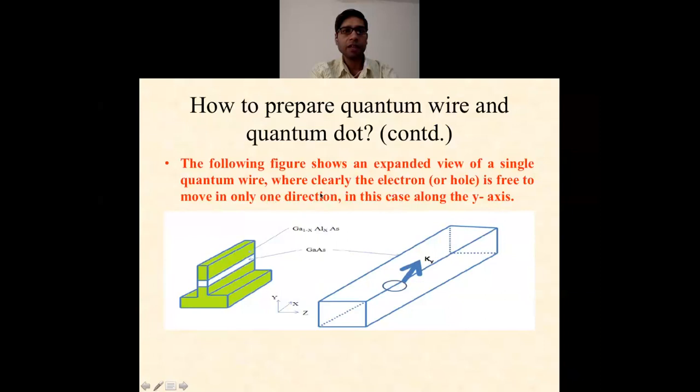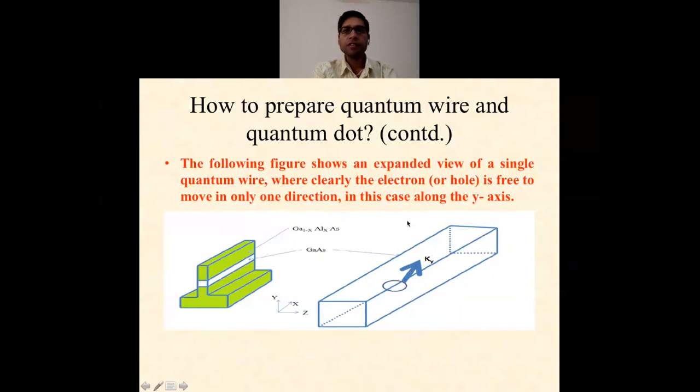Now, how to prepare quantum wires and quantum dots. The following figure shows an expanded view of a single quantum wire where clearly the electron is free to move in only one direction, that is along the y-axis. Quantum dots can again be formed by further lithography and etching. For example, if a quantum well sample is etched to leave pillars rather than wires, then charge carriers can become confined in all three dimensions. In the case of quantum wells, you see there are two dissimilar or similar semiconductors with wide or narrow band gap materials joined together. In the case of quantum wires, we made some strips, but if you further do lithography and the quantum well sample is actually in pillars like this, then it is confined in all three dimensions. As you see, this is the example at the class level, as I showed with the 10th class result of UP Board. In this case, the particle is confined in all three dimensions. Thank you very much for your kind attention.